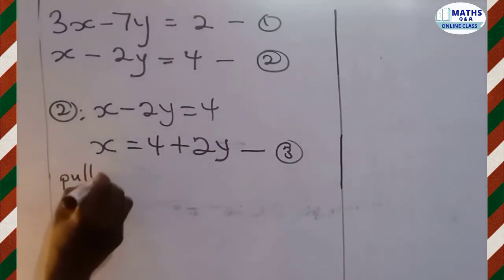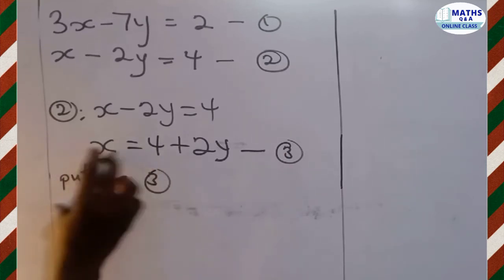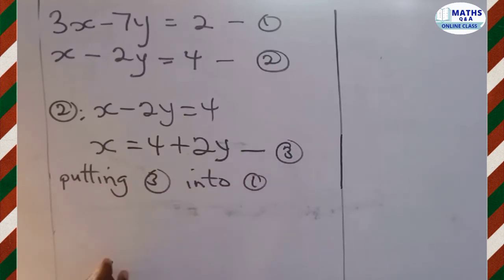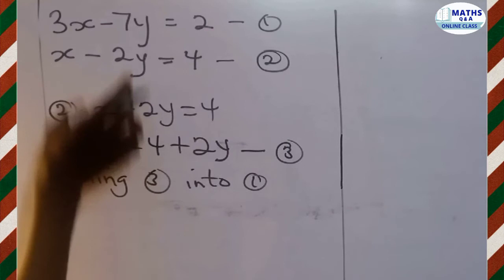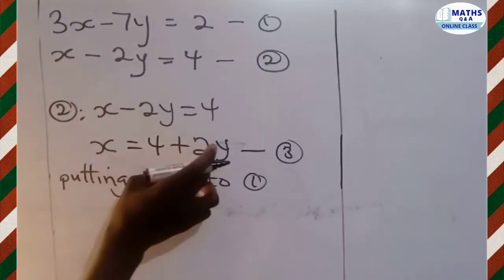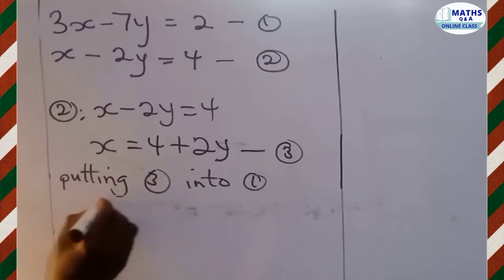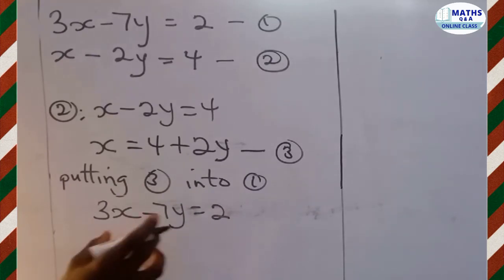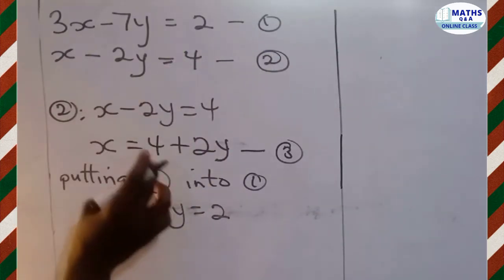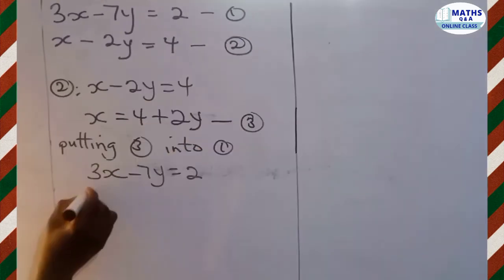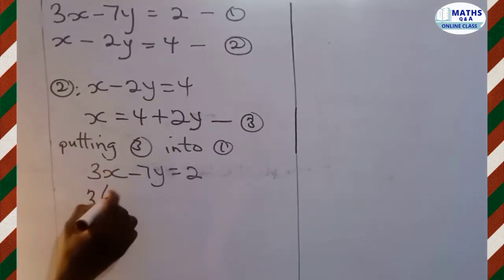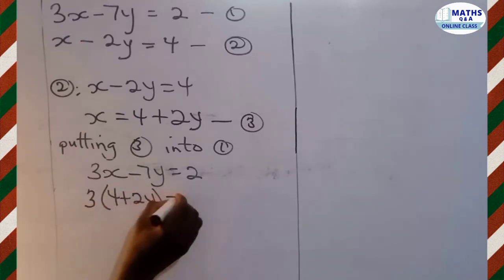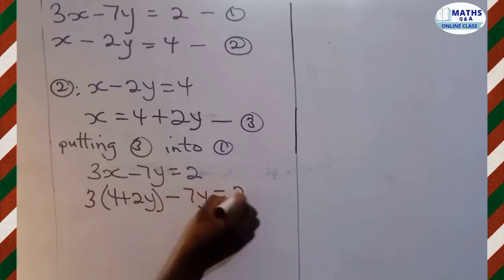Putting equation 3 — x equals 4 plus 2y — into equation 1: wherever we see x in equation 1, we write 4 plus 2y. So equation 1 becomes 3 times (4 plus 2y) minus 7y equals 2.